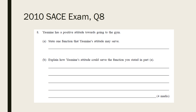To finish, let's examine a past exam question. Pause the video for a moment while you attempt it. You could justify any of the four functions for this question, so choose the one you feel most confident explaining. As part B is worth four marks, you need two well-made points. One should be a good definition of your stated function, followed by an explanation of how Yasmin's attitude could serve this function.